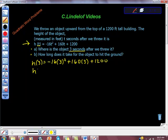And we'll just solve. -16 times 3 squared, which would be 9. So -16 times 9 is -144. And then 160 times 3 is 480, so plus 480. And then bring that down, plus 1200.